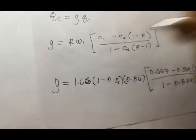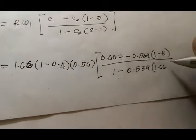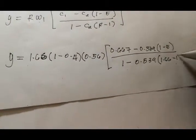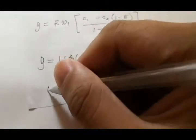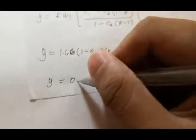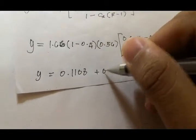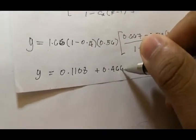times (1 minus E) all over (1 minus 0.539) times (1.66 minus 1). So if you simplify this solution, you should get around 0.1108 plus 0.466E.